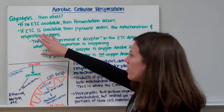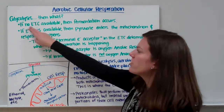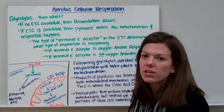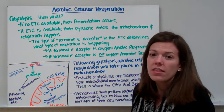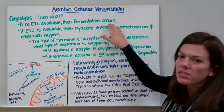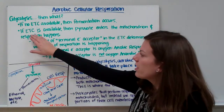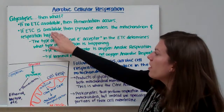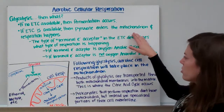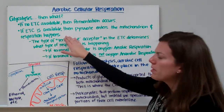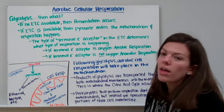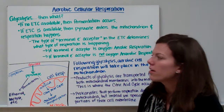Once you finish glycolysis, you've got the question: then what? If there is no electron transport chain available, or if for some reason the cell can't access it, then fermentation will occur, and that happens out in the cytoplasm. If an electron transport chain is available, then pyruvate enters the mitochondrion and respiration will happen.